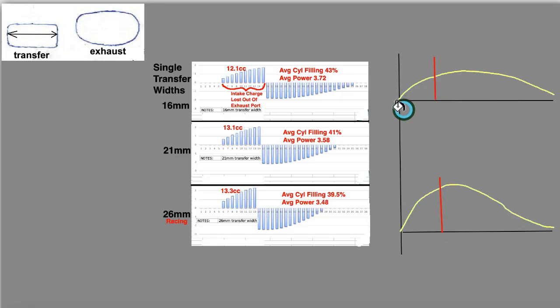Okay, these two graphs show the flow of intake charge that goes into the cylinder from when the transfers start to open until the end of the flow.